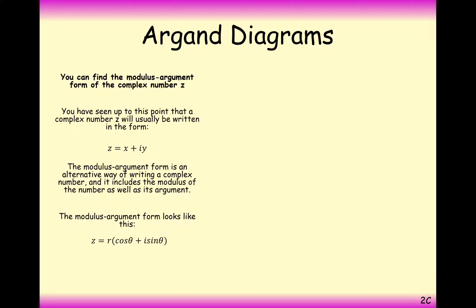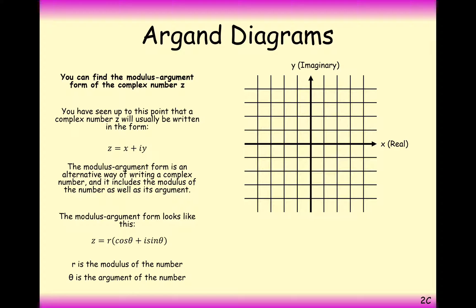So let's see where this comes from as well. r is the modulus, theta is the argument. So if we take any complex number, let's take the complex number up here, it could be any complex number. And let's just remind ourselves of what the modulus is. The modulus is the distance between our complex number and the origin. And theta is the angle of rotation from the real axis, either positively or negatively.